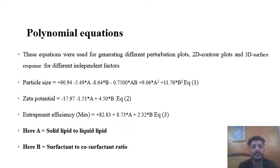For zeta potential, the positive sign with B indicates that factor B has an antagonistic effect on the zeta potential.